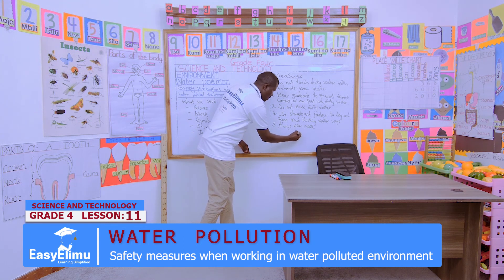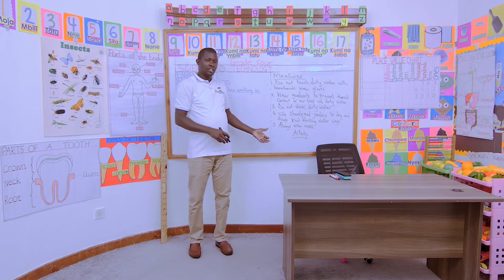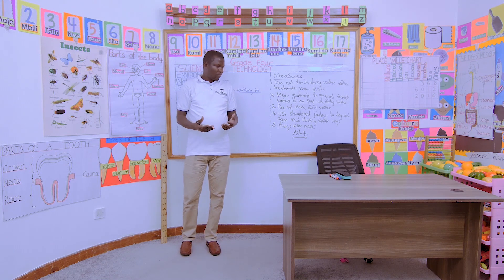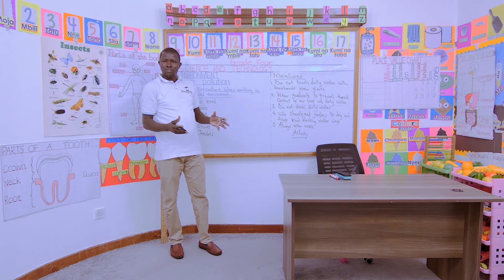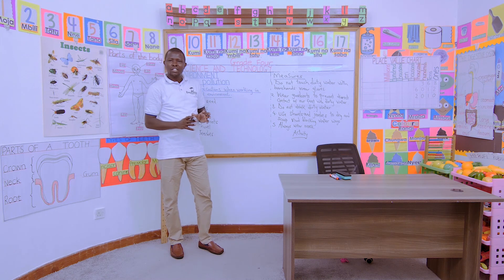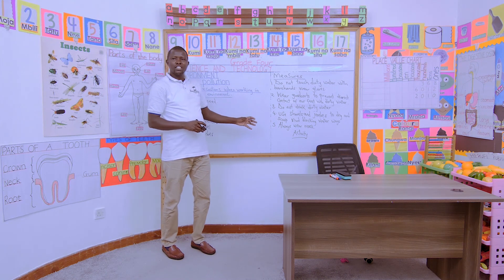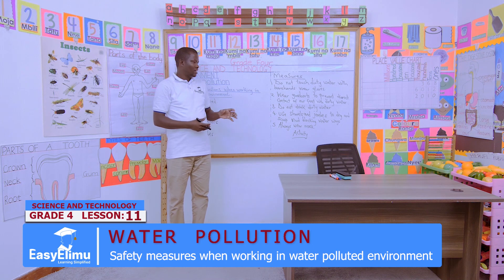And now the activity for today. Kindly request your parents to assist you with a gadget — a phone, tablet, or laptop with internet. Google for more photos showing the importance of water. Then, as a group, make a colorful picture on a manila paper illustrating the importance of clean water, and stick it on our notice board.